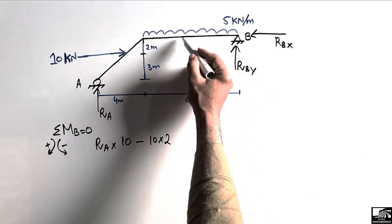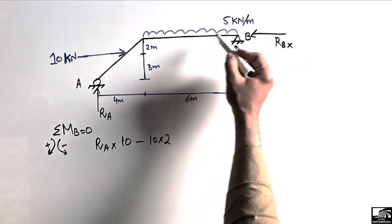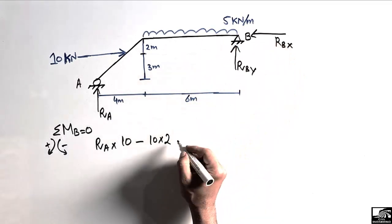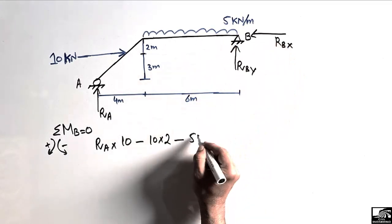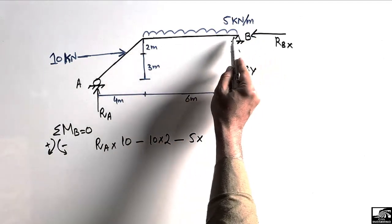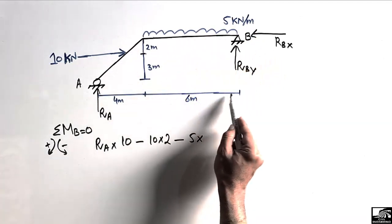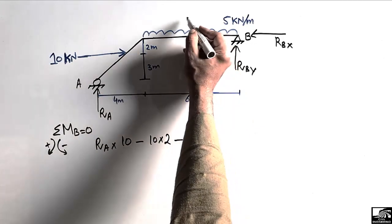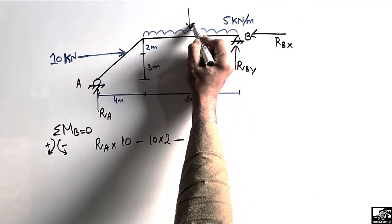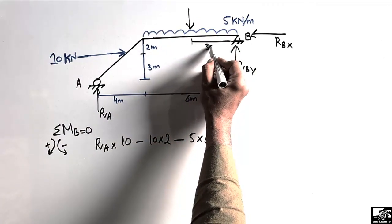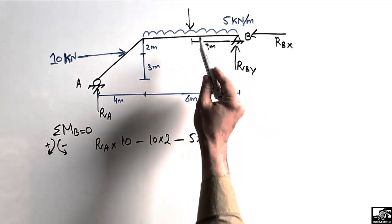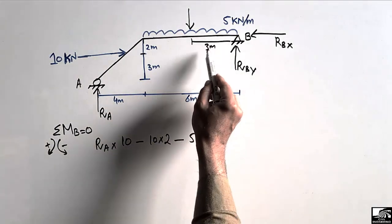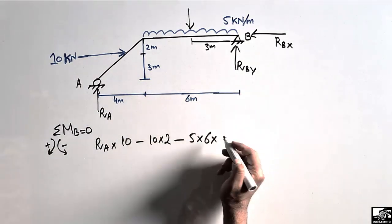The uniformly distributed load also creates an anti-clockwise moment about point B, so it is negative: minus 5 multiplied by its distributed length of 6 meters, multiplied by the moment arm of 3 meters. We first convert the distributed load into a concentrated load, so it acts at the midpoint of the 6-meter length, which is 3 meters.